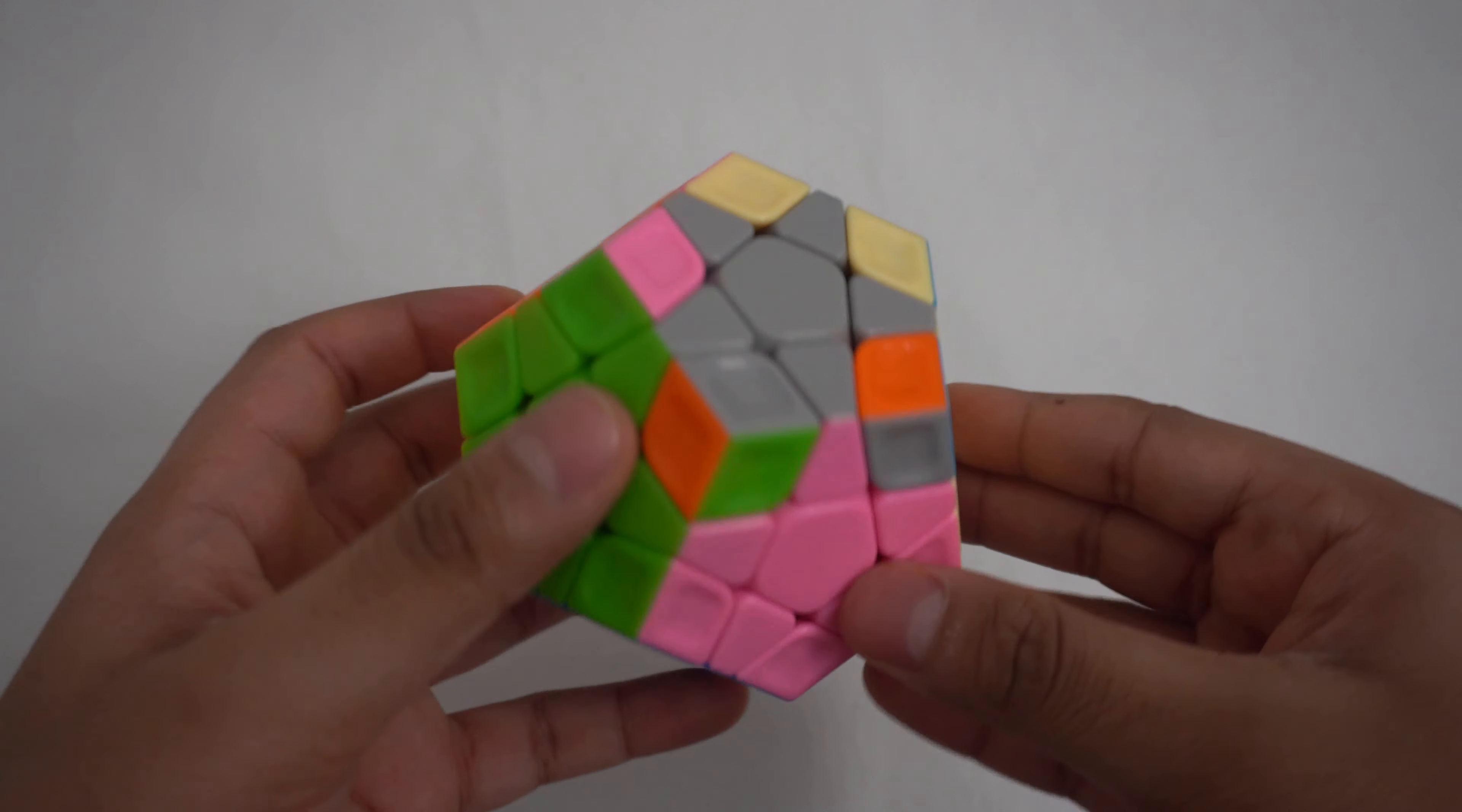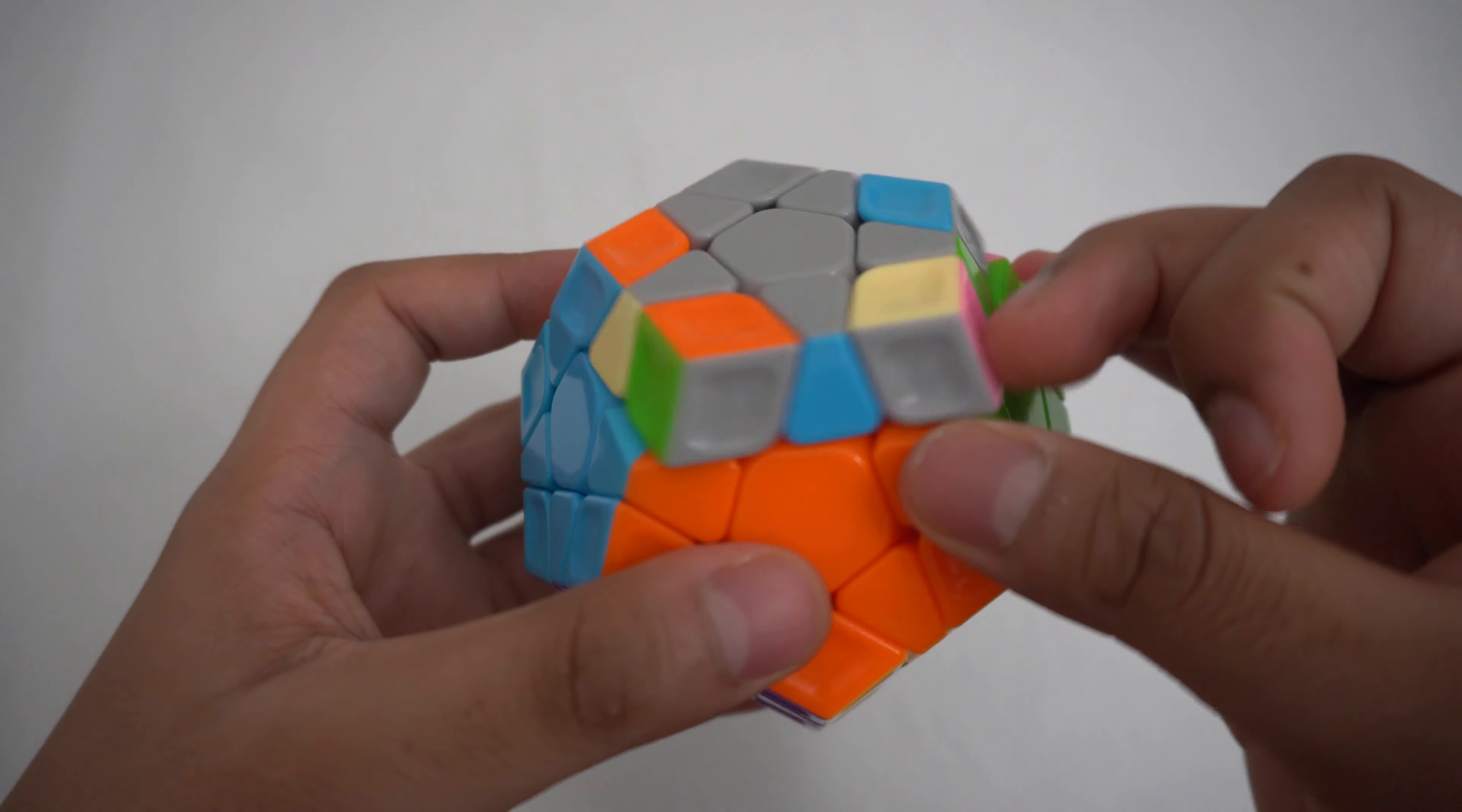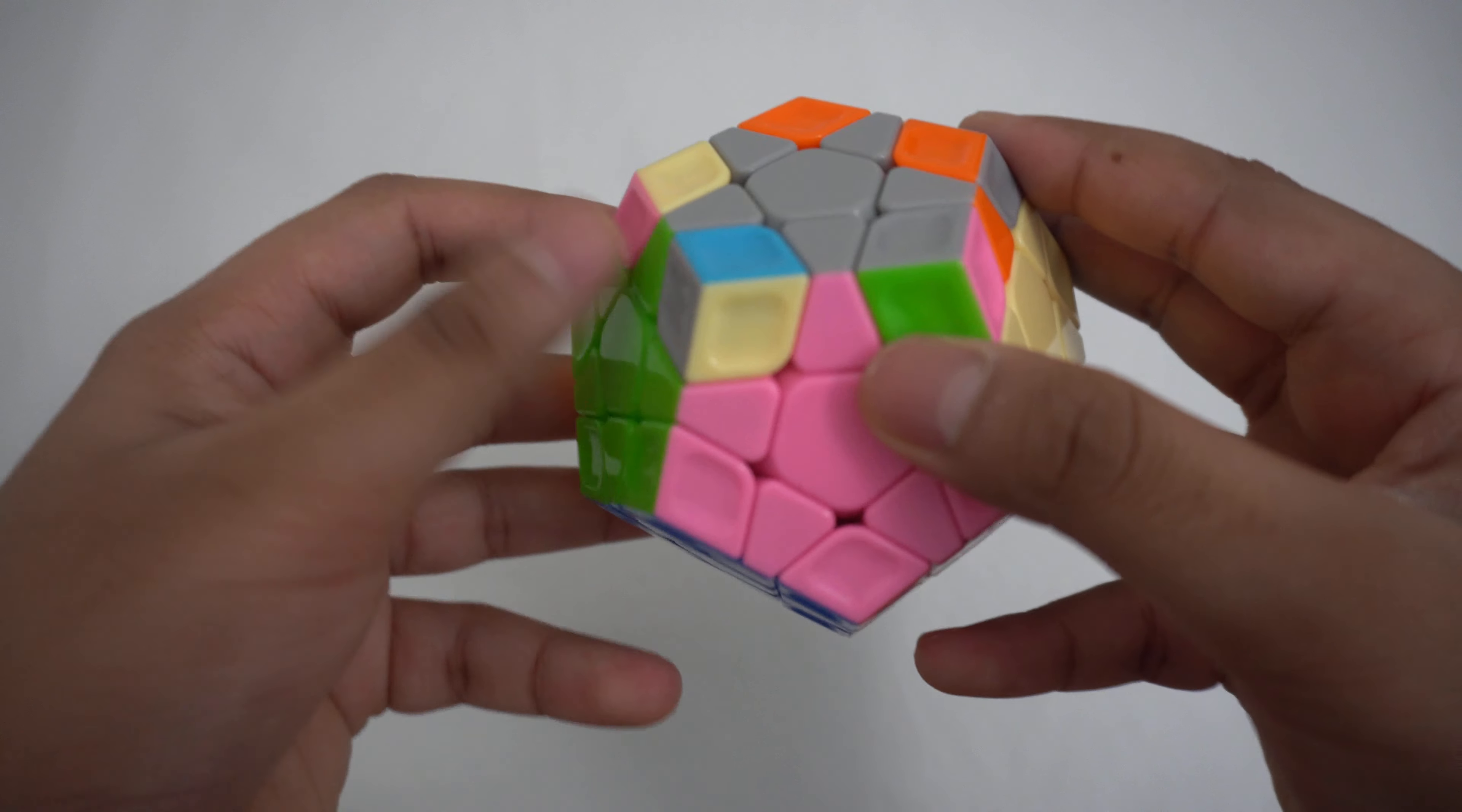The next step is to make it so that all the edge colors match with their centerpieces. If you have only one edge piece that is correct with its centerpiece, then move around the top and you should find two in the correct position. If these two are right next to each other, then put one of the edge facing you and the other one to the left and do this algorithm.